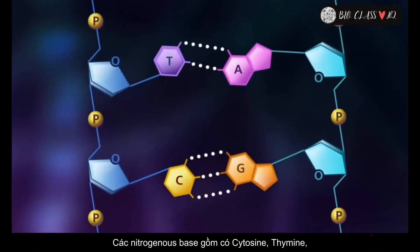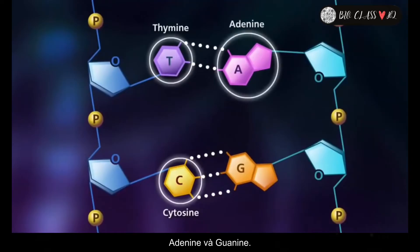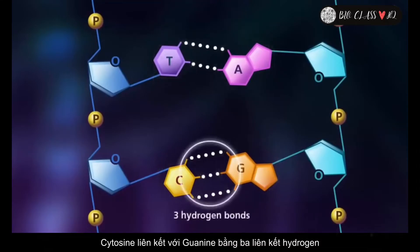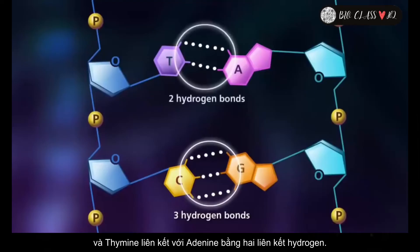The nitrogenous bases include cytosine, thymine, adenine, and guanine. Cytosine forms three hydrogen bonds with guanine, and thymine forms two hydrogen bonds with adenine. This is referred to as complementary base pairing.